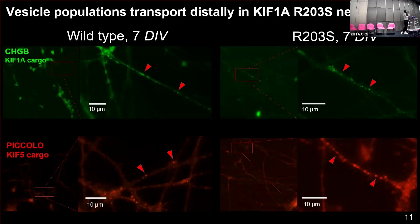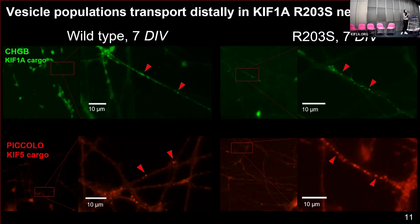Now we're looking at vesicle populations in a similar type of experiment. We're looking at chromogranin B at the top in green, which is carried by KIF1A. At the bottom is a control looking at the protein piccolo, which is carried by a different kinesin called KIF5. As we went over, there are many kinesins that carry out many different functions. What we saw is that vesicle populations transport distally in KIF1A R203S neurons similarly — the allocation of these cargos was similar in both wild type and patient variant neurons.